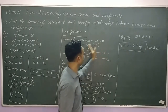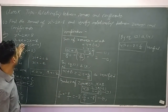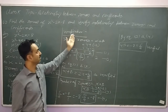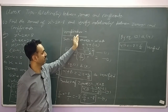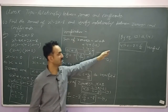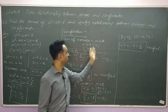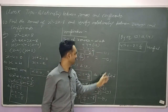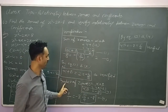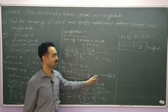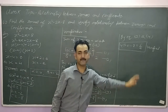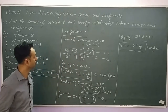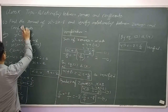So in this question, first we found the zeros, and then we verified two relationships: the first is the sum of zeros, and the second is the product of zeros. Now we will do another question.